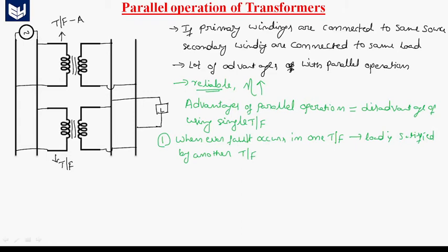If you are operating two transformers in parallel and one transformer fails due to external or internal disturbances, even though one transformer fails, the other transformer will still work. So we can deliver the power continuously to the load by parallel operation of transformers.